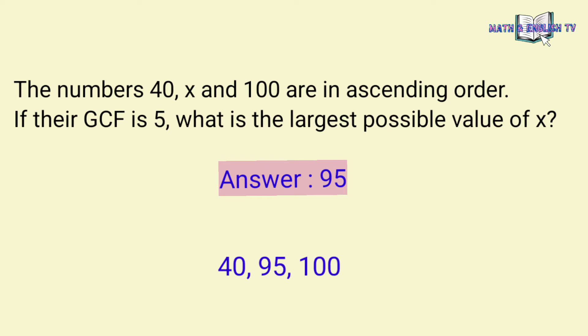40, 95, and 100 are in ascending order, meaning from smallest to highest number, and their GCF is 5.